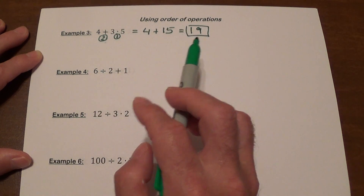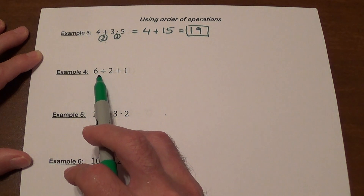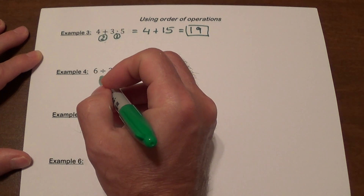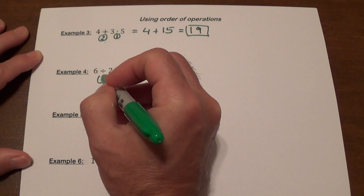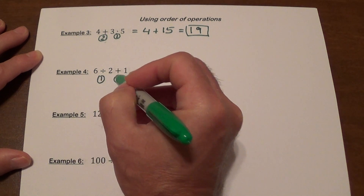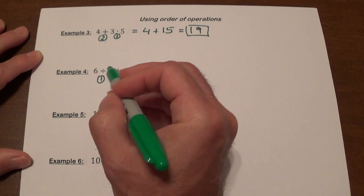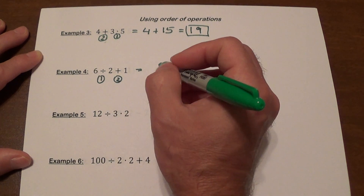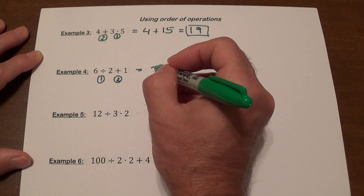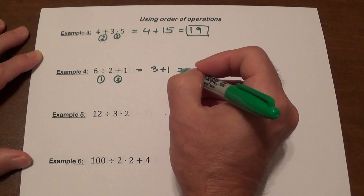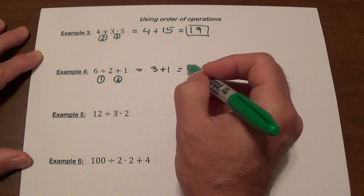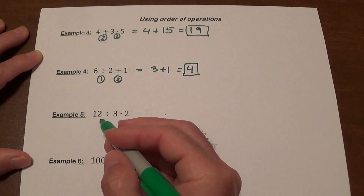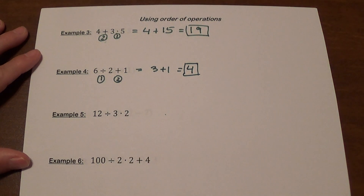Example 4: 6 divided by 2 plus 1. Division is done before addition, so we divide first — 6 divided by 2 is 3 — and then 3 plus 1 gives us 4.